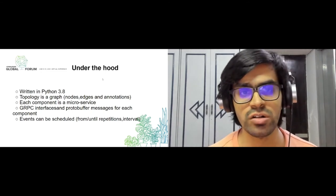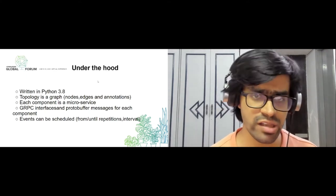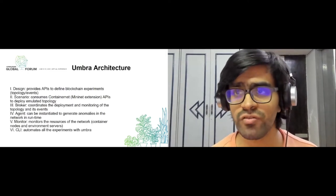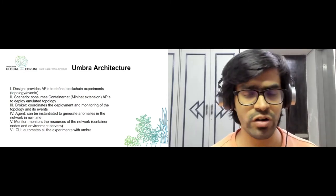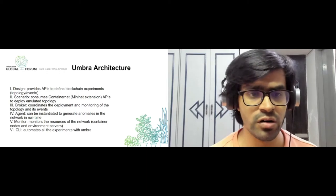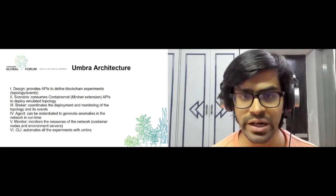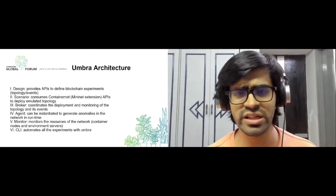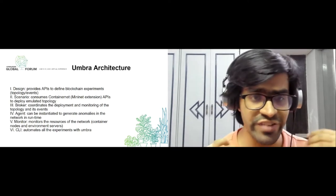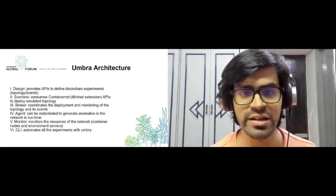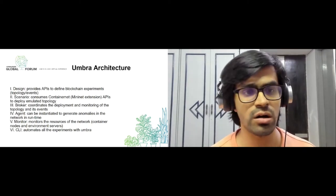The Umbra architecture is defined under six different categories. The first is the Umbra Design, which is not a component itself but an API that allows users to compose experiments for Umbra. Since it's an API, it's designed so we can have a main instance of any kind of blockchain project as a topology — it could be a Fabric topology or an Iroha topology — along with all the different associated events.